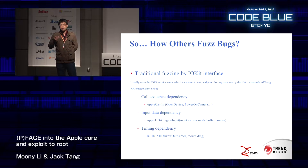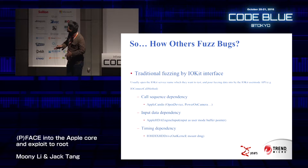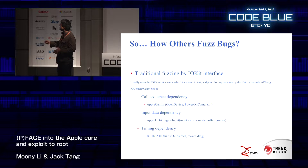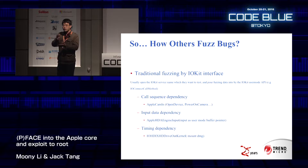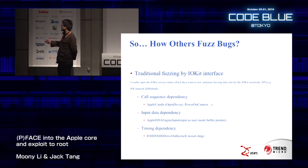However, there exist several condition dependencies. We have categorized these into three categories: call sequence dependency, input dependency, and timing dependency. For example, for call sequence dependency, the researcher must open the device — for example, the camera iOS service — first and power on the service, then do active fuzzing normally. If any initialization fails, the fuzzing activity would fail early. There also exists input data dependency.